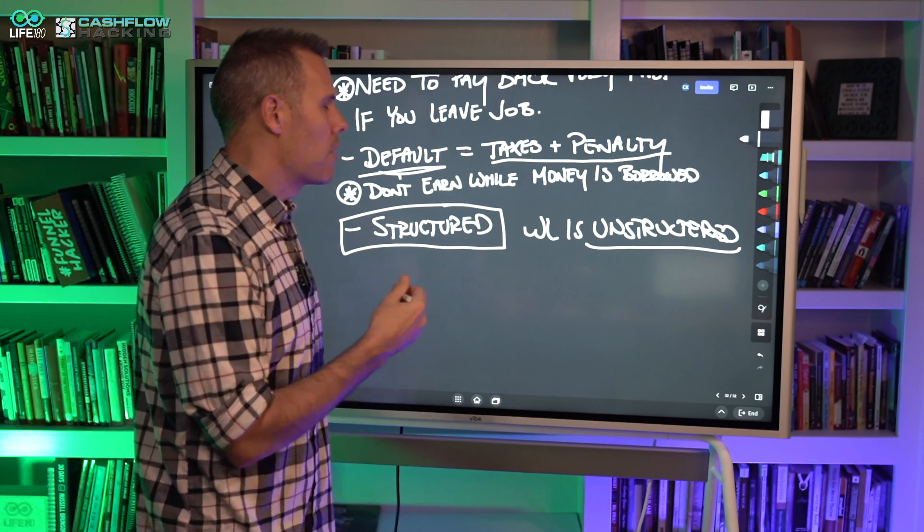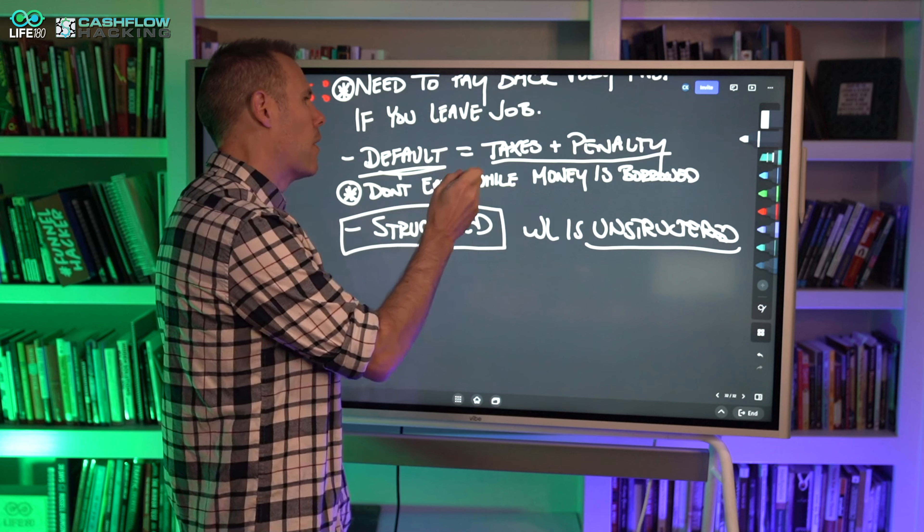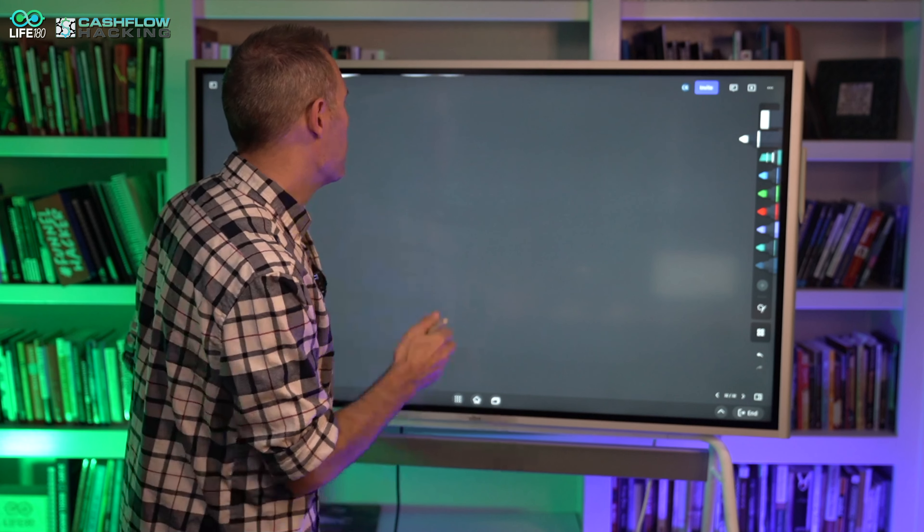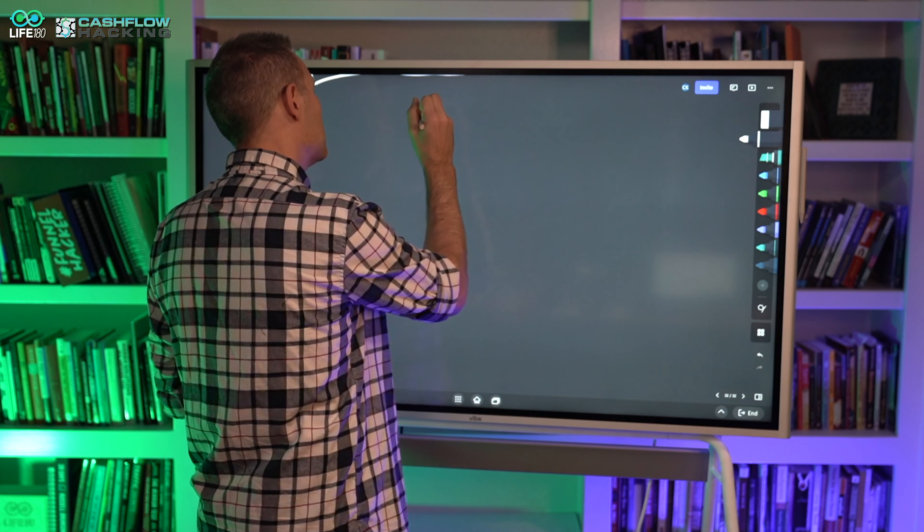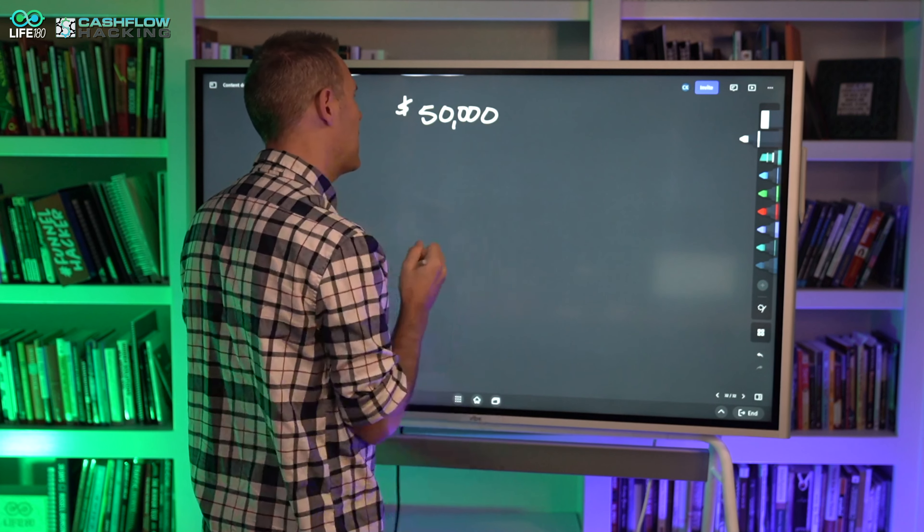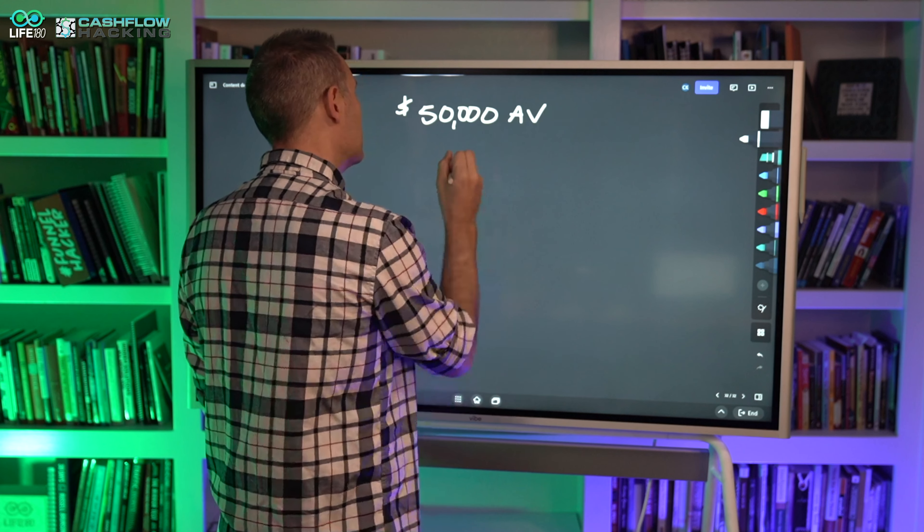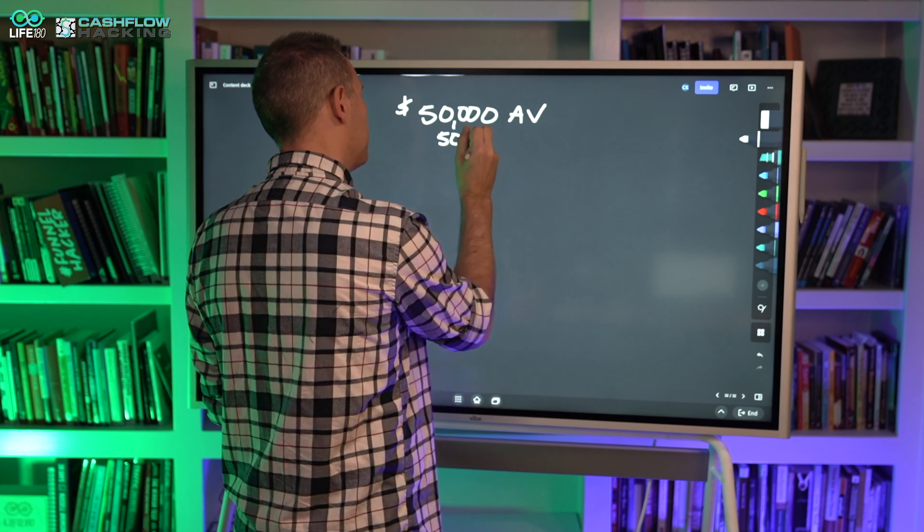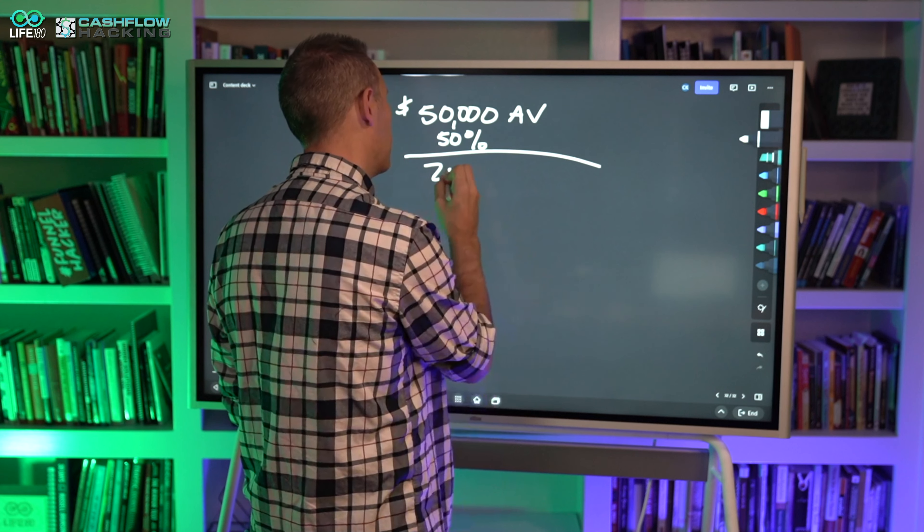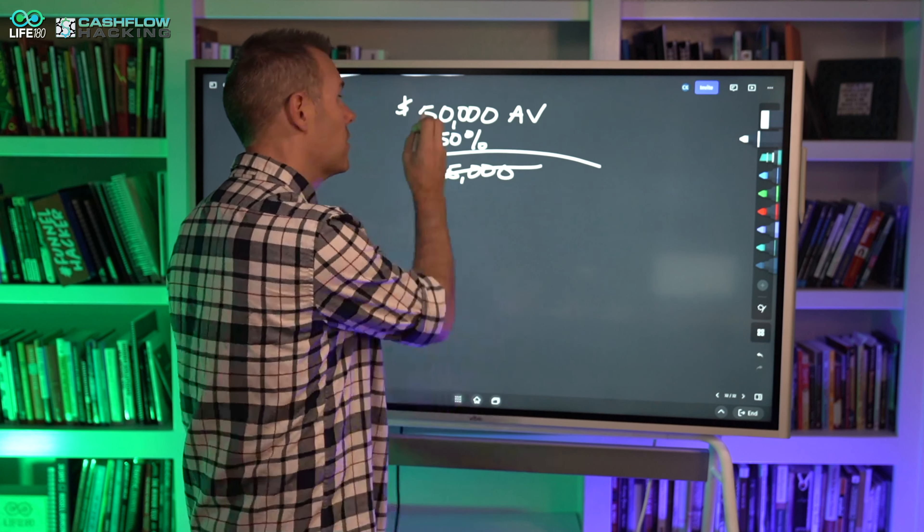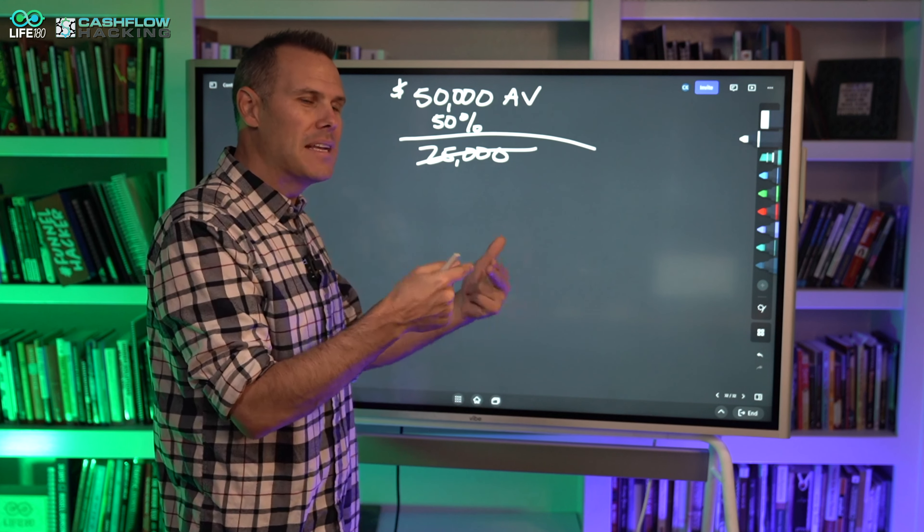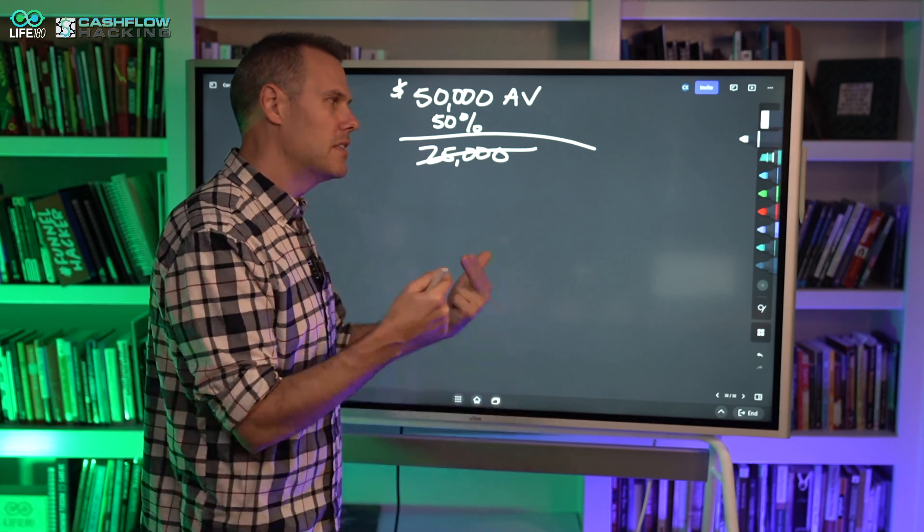The other thing is, and this is a big one - if you borrow money from your 401k, you are not earning while that money is being borrowed. That money, that growth, is interrupted. So I'm going to use this example here. Let's say you had an account value of $50,000. Let's run a little case study here.